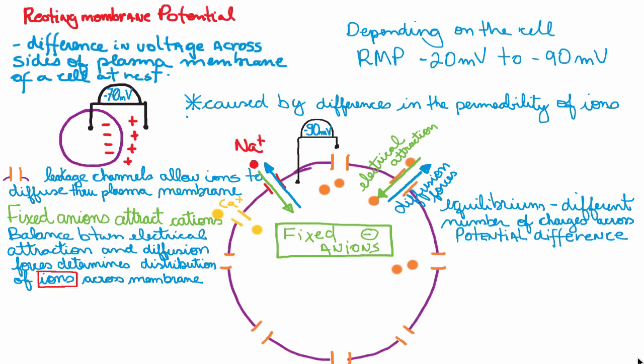You can actually say that there's an equilibrium potential for each ion - an equilibrium potential for potassium, an equilibrium potential for sodium - and if you add them all together, the final equilibrium of this ensemble of ions creates the resting membrane potential. It turns out that the potassium leakage channels are about 75 times more abundant than the sodium channels, and therefore potassium seems to be the major ion contributing to that uneven distribution of ions across the membrane.